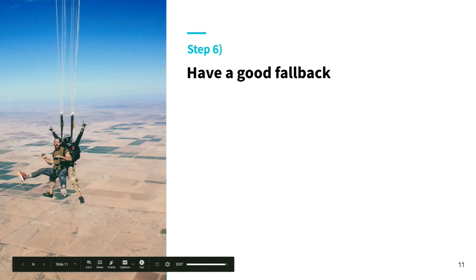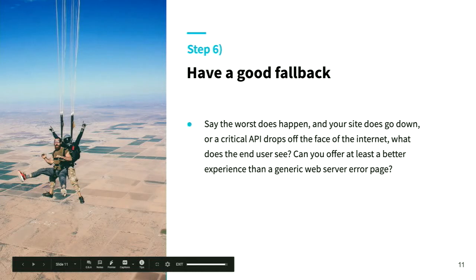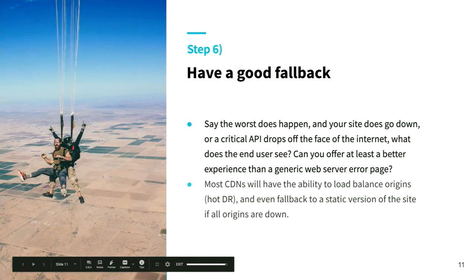If you had one slide to come away with: have a good fallback. Plan for the worst. What happens when your site does go down? Say a developer pushes a bad commit, or a content editor edits the view on the home page and removes pagination - you get a thousand items on your home page and chaos reigns. What is the next best experience you can offer if your origin is dead? Most CDNs will have a feature called load balancing, so why not have a hot cluster sitting somewhere else? This is an insurance policy.